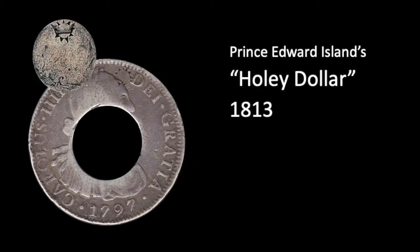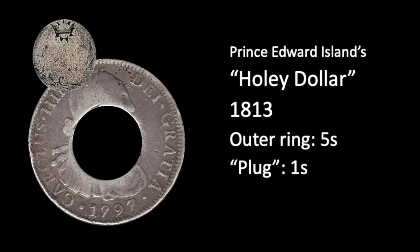Sometimes these overvaluations took a physical form instead of just being published exchange rates. In a few British colonies, including Prince Edward Island, colonial governments arranged to punch a hole in the center of some Spanish dollars. They then counterstamped both the outer ring and the central plug with a special sunburst design to show that the governor authorized the pieces to pass at a certain rate. In the case of Prince Edward Island, that rate was five shillings for the outer ring and one shilling for the plug — six shillings altogether — an overvaluation of more than 33%.